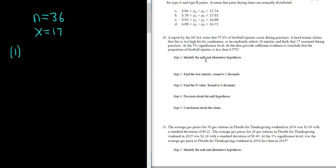So step one, identify the null and alternative hypothesis. So the null hypothesis is H sub 0, and the alternative one is H sub 1. And we can get this from the last sentence. It says, do the data provide sufficient evidence to conclude that the proportion of football injuries is less than 0.576? So we're talking about a proportion, so it's P. So this will be P less than 0.576. The last sentence will usually give you your H1.